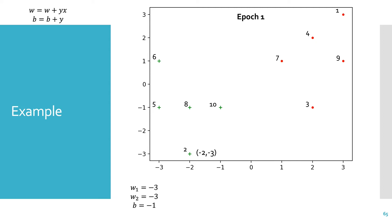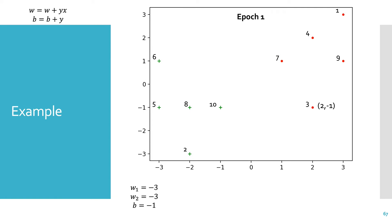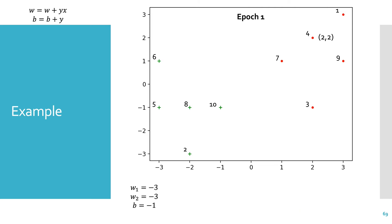For sample 2 we calculate the activation and get 14. Multiplying 14 by label 1 gives 14, which is greater than 0, so we don't update. Sample 3 at (2, -1) has a negative label; the activation is -4. Negative 4 times the label -1 is greater than 0, so no update. Sample 4 has feature vector (2, 2) and label -1; calculating the activation gives -13. Negative 13 times label -1 gives 13, which is greater than 0, so no update.